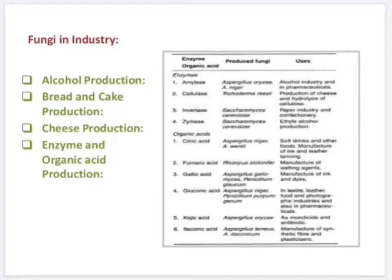Now, enzyme and organic acid production. Many fungi are used in the commercial production of enzymes such as amylase, cellulase, invertase, and zymase, and organic acids such as citric acid, fumaric acid, gallic acid, gluconic acid, kojic acid, and ketogluconic acid.